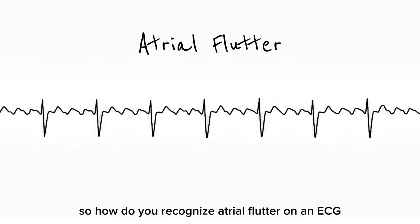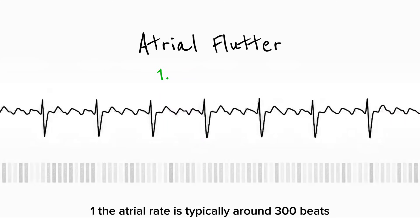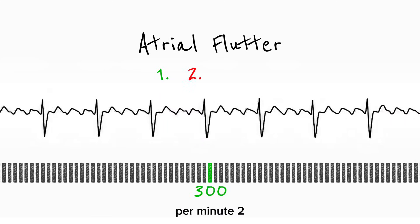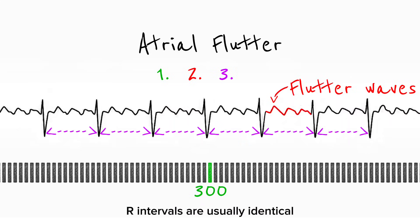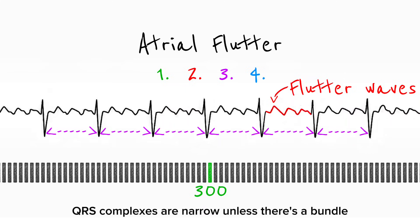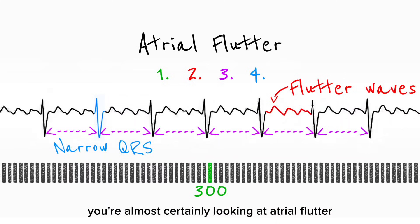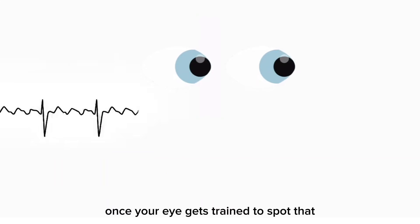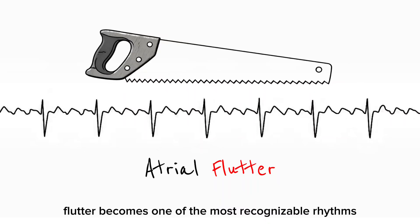So how do you recognize atrial flutter on an ECG? Think of it as a checklist. First, the atrial rate is typically around 300 beats per minute. Second, you will not see P waves — instead, you'll see flutter waves creating a sawtooth pattern. Third, the RR intervals are usually identical due to fixed AV block. Fourth, QRS complexes are narrow, unless there's a bundle branch block or aberrancy. If you find all these features on an ECG, you're almost certainly looking at atrial flutter, and once your eye gets trained to spot that sawtooth pattern, atrial flutter becomes one of the most recognizable rhythms in cardiology.